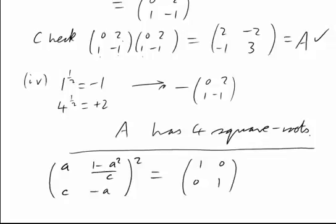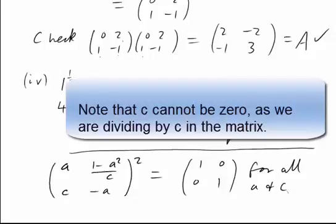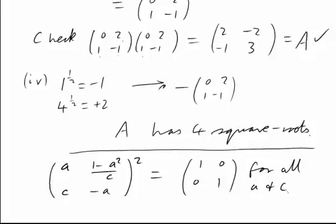For all values of A and C. The identity 1, 0, 0, 1 is an example of one of those special matrices that has an infinite number of square roots. In fact, in a sense it's doubly infinite: we have any choice we like for both A and C. It's not the only matrix with this property, but it is the most obvious.